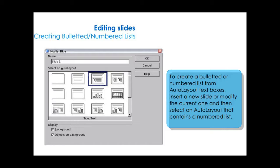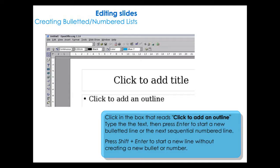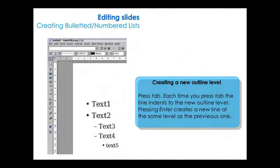To create a bulleted or numbered list from auto-layout text boxes, insert a new slide or modify the current one and select an auto-layout that contains a numbered list. Click in the box that reads 'click to add an outline.' Type the text, then press Enter to start a new bulleted line or the next sequential numbered line. Press Shift+Enter to start a new line without creating a new bullet or number. Press Tab to indent to a new outline level — each Tab press indents the line further. Pressing Enter creates a new line at the same level as the previous one.